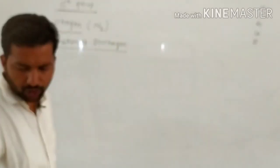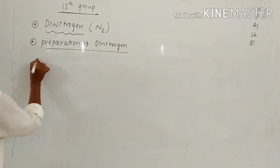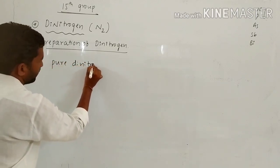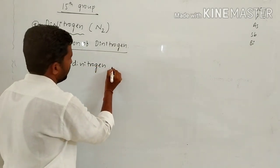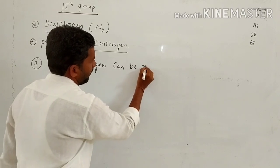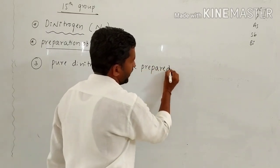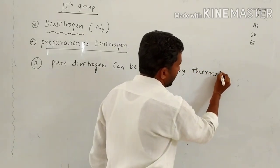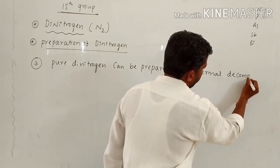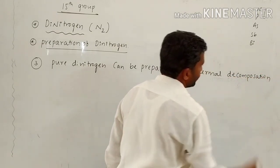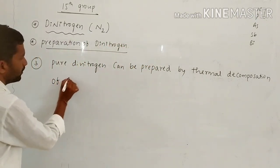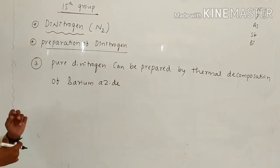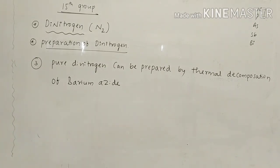In the third preparation of di-nitrogen — there are only three preparations — di-nitrogen can be prepared by the thermal decomposition of barium azide. The pure form of di-nitrogen can be prepared by the thermal decomposition of barium azide, Ba(N3)2.